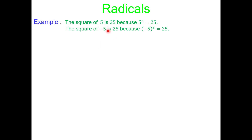The square of negative 5 is also 25 because negative 5 squared is 25. Quick note: if you have parentheses, you're taking negative 5 times itself, so the negative times the negative turns positive. If there were no parentheses, this would actually equal negative 25.